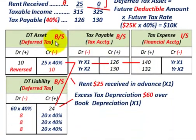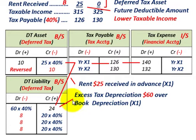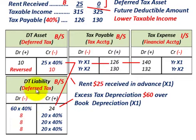We also record our deferred tax asset — calculated as $25,000 rent received in advance times 40% — so we debit the deferred tax asset for $10,000. And we record the deferred tax liability from the $60,000 excess tax depreciation over book depreciation times 40%, so we credit the deferred tax liability for $24,000.